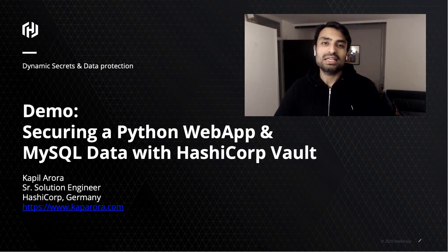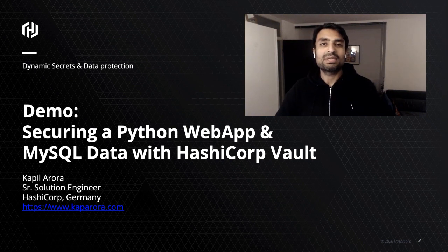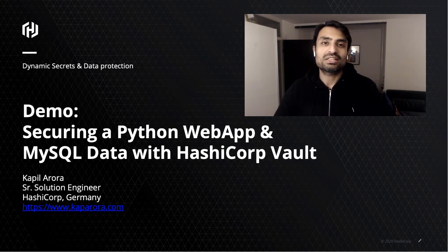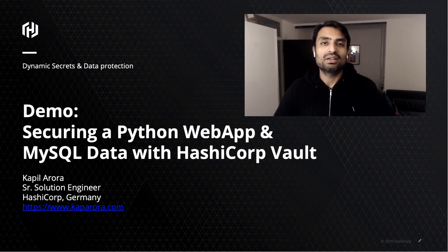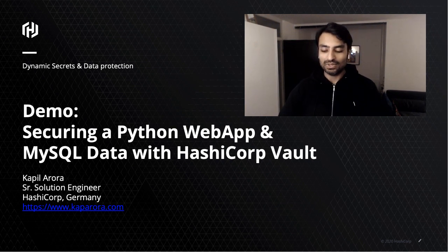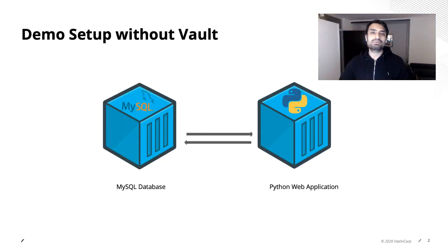We will showcase different features that are available in HashiCorp Vault — for example, Dynamic Secrets for the database, and also the Transit and Transform secret engines, which are used for encryption as a service and to do format-preserving encryption, as well as data masking. So let's get right into it and I will show you how the demo setup looks like.